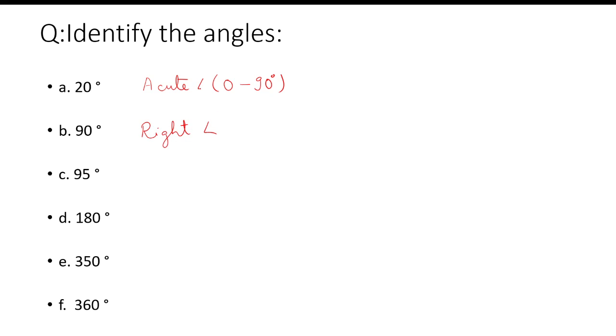95 degrees means obtuse angle, which lies between 90 degrees and 180 degrees. 180 degrees means straight angle. And here we have 350 degrees, children. 350 degrees means reflex angle.